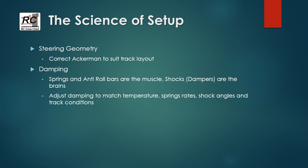Last, but by no means least, is damping. This is how you set up your shocks to control the springs and anti-roll bars. Springs and anti-roll bars are the muscle that resist the roll of the car, and the dampers or shocks are what control that muscle — the brains of the system — so that the car doesn't start oscillating out of control. You need to adjust your damping to match the temperature where you're racing, whether hot or cold, the spring rates you're using — heavier spring rates require more damping — the shock angles, and the track conditions, whether it's a smooth or bumpy surface.